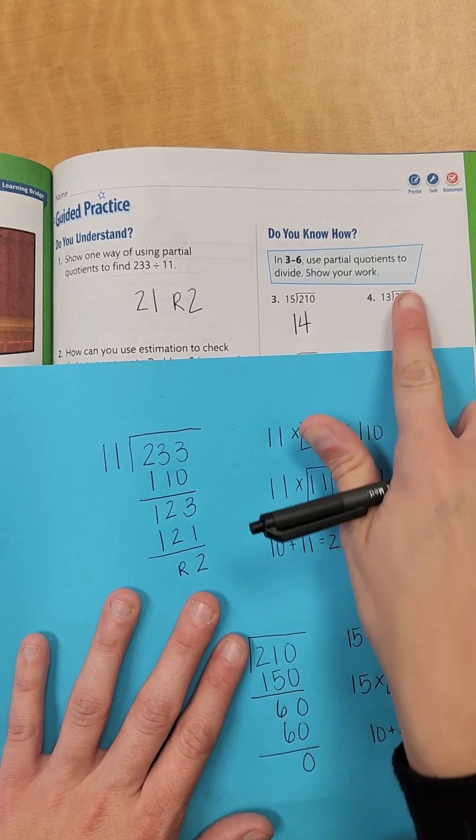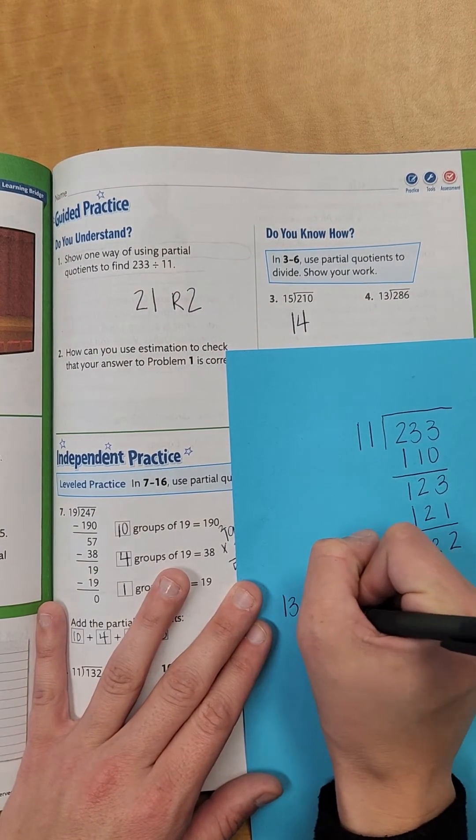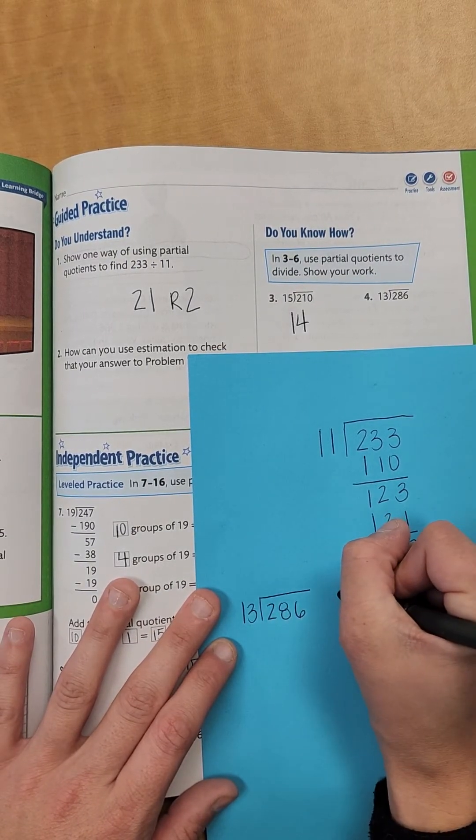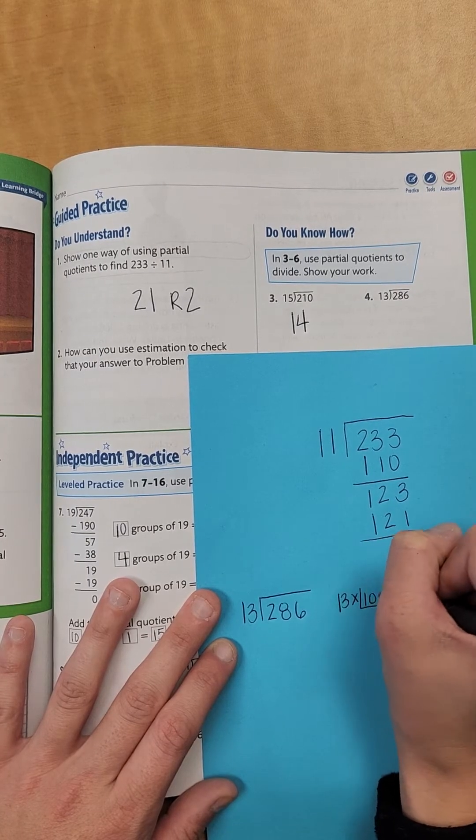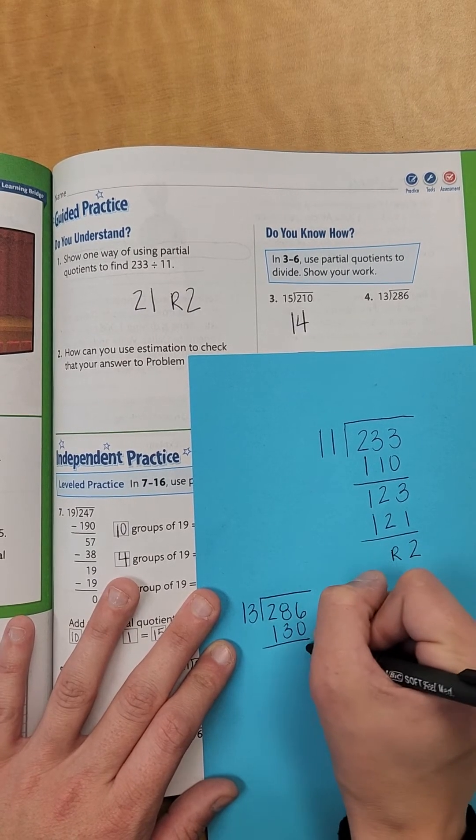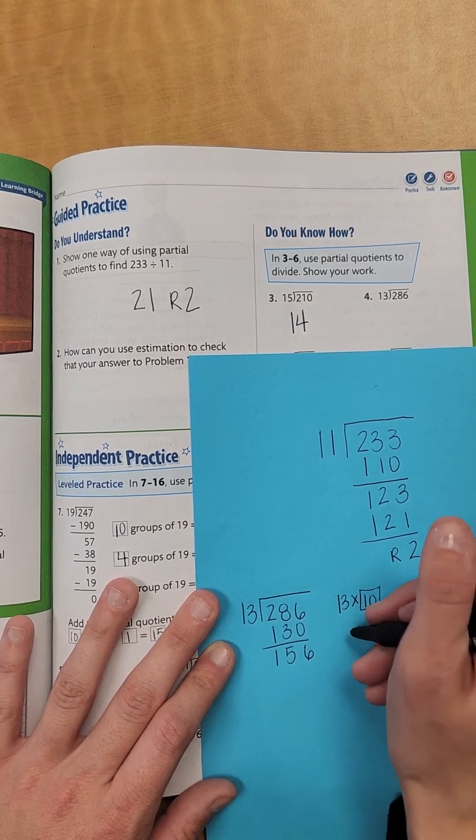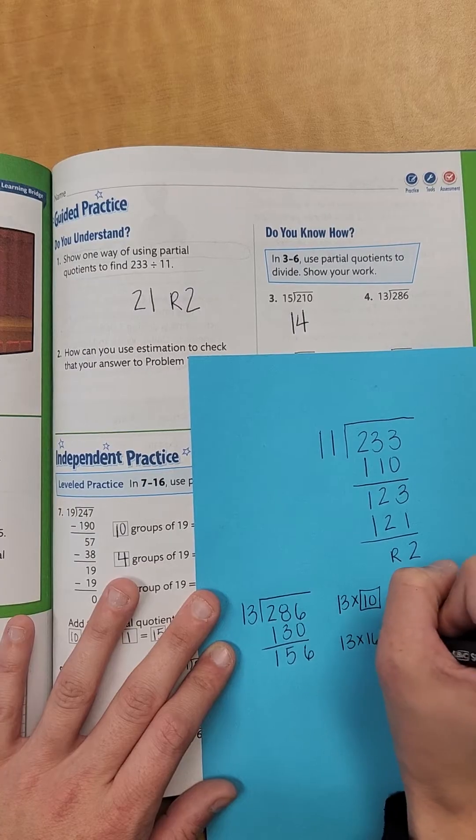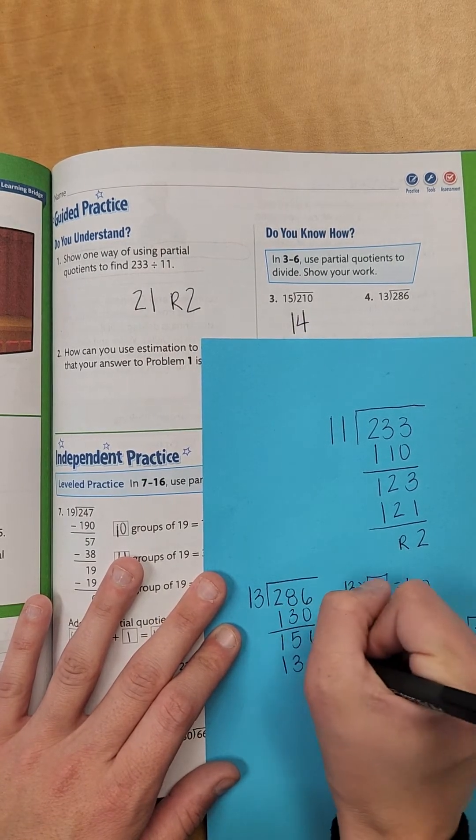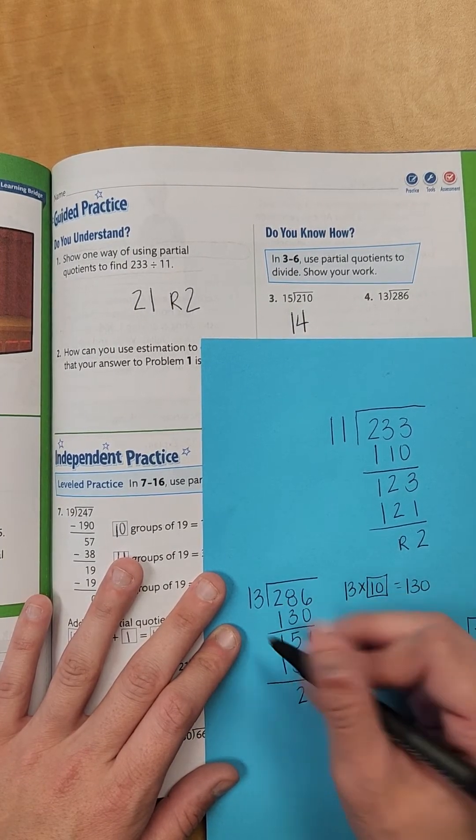Let's do number 4 together. I know this is a little different than maybe what you're used to, but we're going to keep going through these. 13 divided into 286. I know I can do 13 times 10. I'm going to put a box around 10. That's going to give me 130. So 130 subtracted, I'm left with 6, 5, 1. I can do that again. 13 times 10 equals 130, which gives me, if I subtract it, 6, 2, 0.